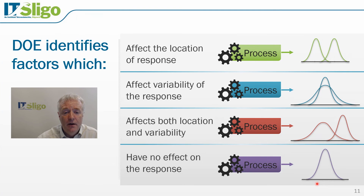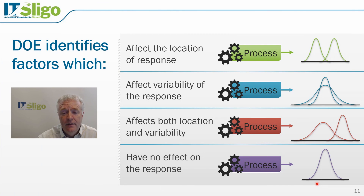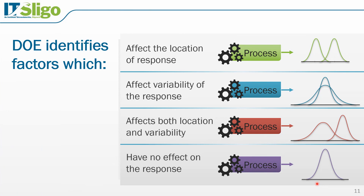For example, if we go back to the popcorn example, if the cost of the popcorn had no influence on the taste or the number of unpopped corn, then we could have opted for the cheaper brand, and yet we would have maximized the taste and at the same time minimized the number of unpopped corn.